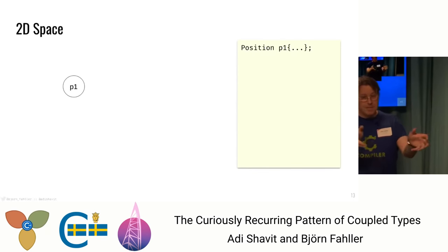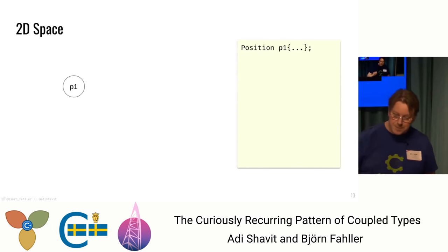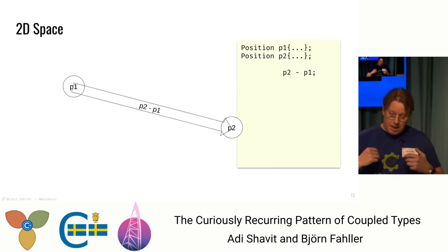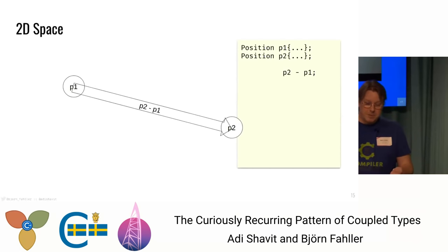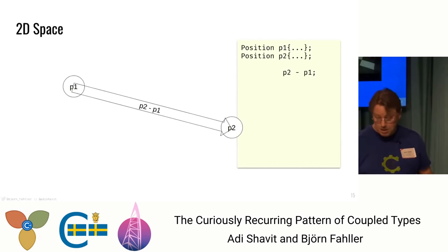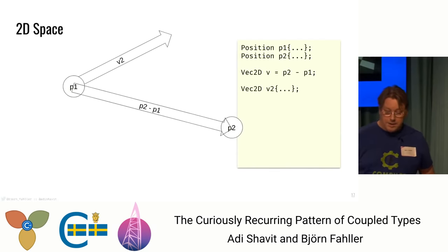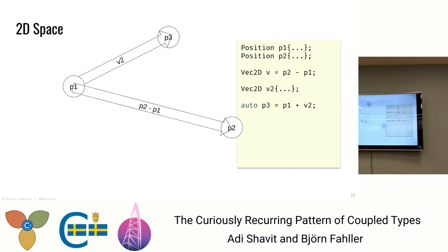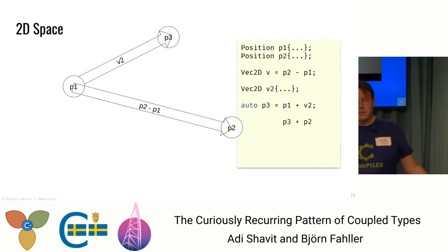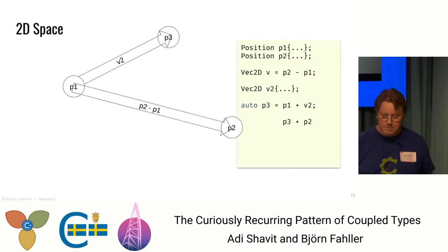We have points in space — a point exists as a location somewhere, a position. We can have another position. The difference we get by subtracting two points is the vector from one point to another. So P2 minus P1 is the vector that gets you from P1 to P2. We can add vectors to get another point, because a point plus a vector is a point — a position plus a vector is a position. Can we add points? No. I cannot imagine what that would mean.